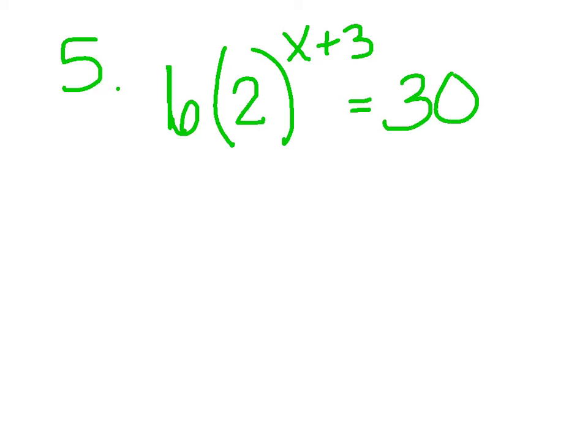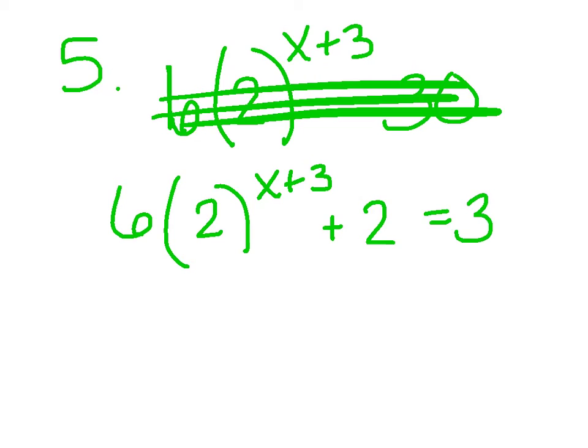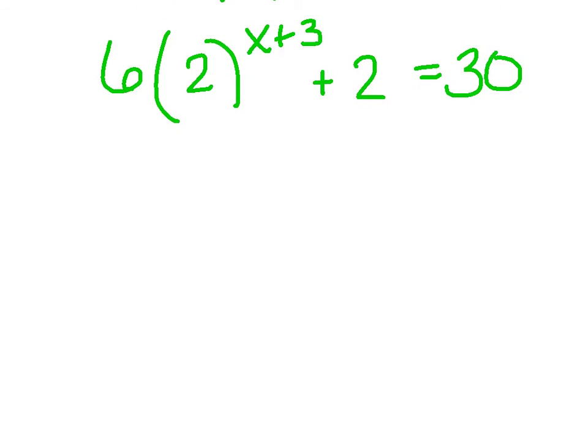Well, we've made it to our last example, number 5. Here we go. 6 times 2 to the x plus 3 plus 2 equals 30. This is probably as ugly as it's going to get. We might as well dive right into it. Go ahead and put that box around the base and the exponent. This is what my goal is to isolate. The base and the exponent. I have to get rid of everybody else first before I can use common log or natural log.